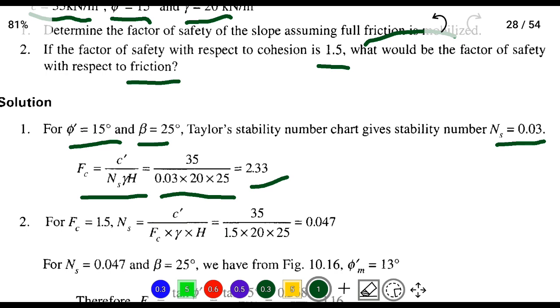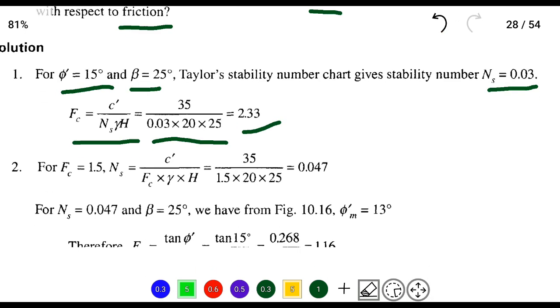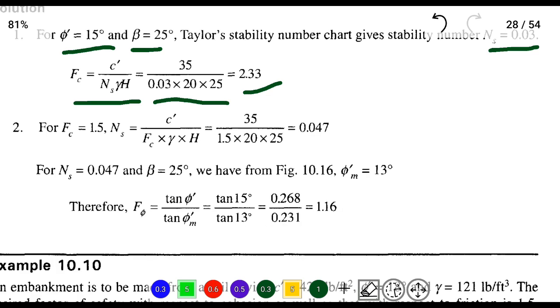For the second question, the Fc value for cohesion equals 1.5, so we have to find the factor of safety with respect to friction. We substitute Fc = 1.5 to find the Ns value. Ns = c'/(Fc × γ × H).